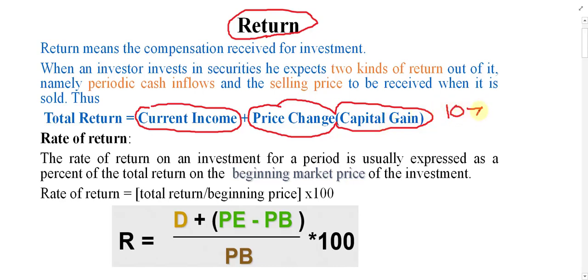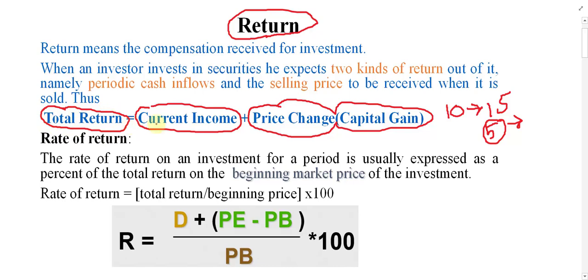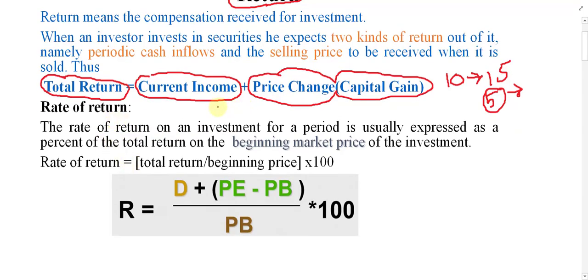For example, if I purchased something for 10 but sold it for 15, this change of 5 in the price of the security is called price change or capital gain. Investors expect both types: current income during or at the end of the year, and price change or capital gain when they sell their investment. Current income plus price change is called total income — that is the total income the investor expects from the business.